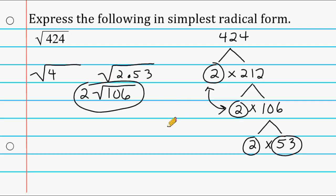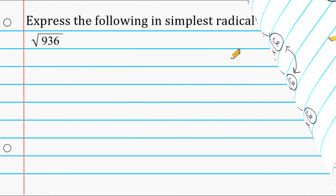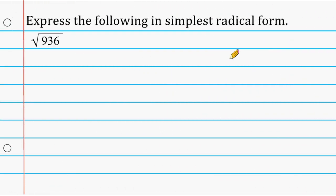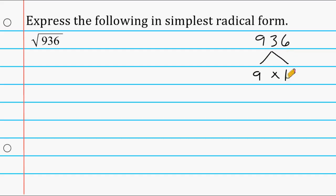Let's go ahead and do another example. We have 936, so let's break that down into all prime numbers. I'm going to start by multiplying 9 times 104 to make 936. I recognize that 9 can fit into itself once, and 9 can fit into 36 exactly 4 times, so 9 times 104 produces 936.